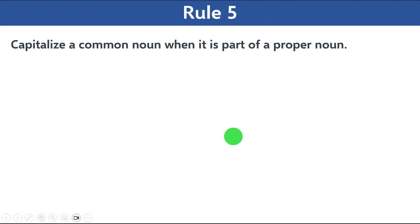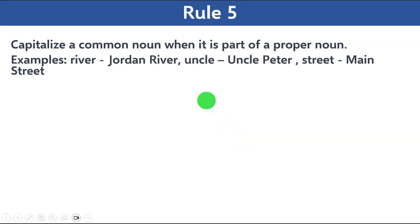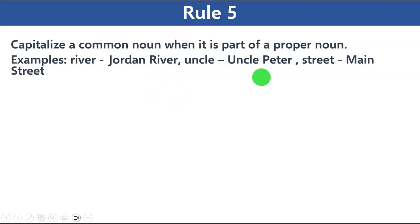Rule number five says: capitalize a common noun when it is part of a proper noun. For example, 'river' is a common noun but 'Jordan River' is a proper noun, so 'Jordan' is capitalized. 'Uncle' is a common noun but 'Uncle Peter' is a proper noun, so 'P' is capitalized. 'Street' is common, but 'Main Street' is proper. That is rule number five: capitalize a common noun when it is part of a proper noun.